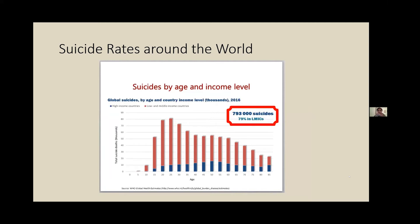Looking at suicide rates around the world by age and income level of the country: high income countries tend to have lower numbers of suicides, but low and middle income countries account for 79% of suicides in the world. Low and middle income countries have higher suicide rates in the younger age population, whereas in higher income countries the suicide rates tend to be higher in middle age and above — about 50 to 55 years old and older.